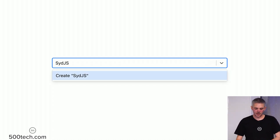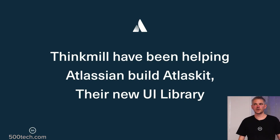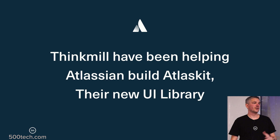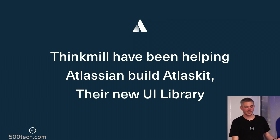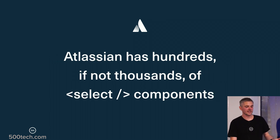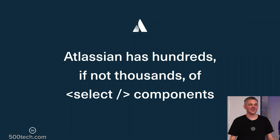A bit of background on how we got here: at Thinkmill in Sydney, we've been helping Atlassian build their new UI library, Atlas Kit. This has been quite an adventure because they have a huge amount of scale and really big requirements — it's rolling out through all of their products. One of the things that kept coming up as something we wanted to address really well is the select components. Atlassian have hundreds, maybe thousands, of select components across their products.